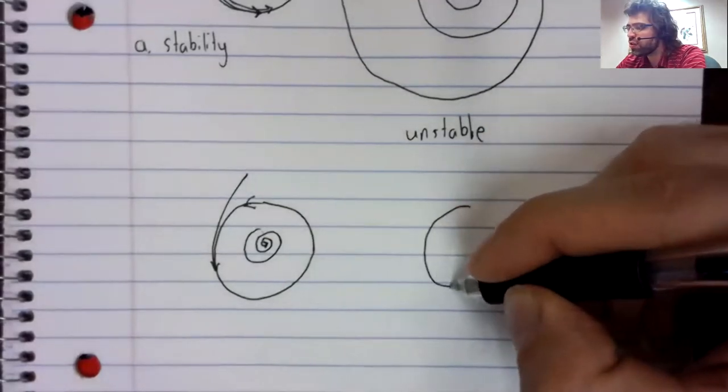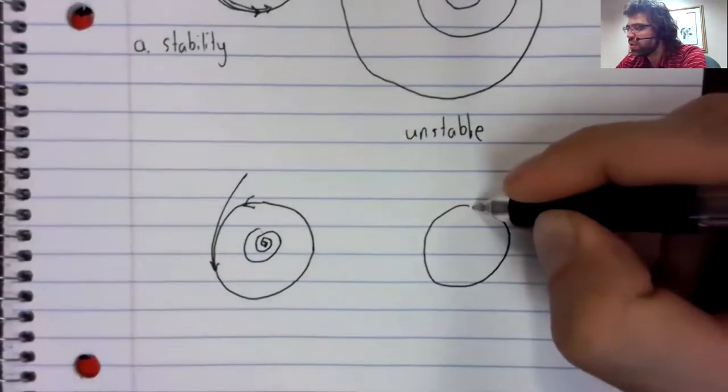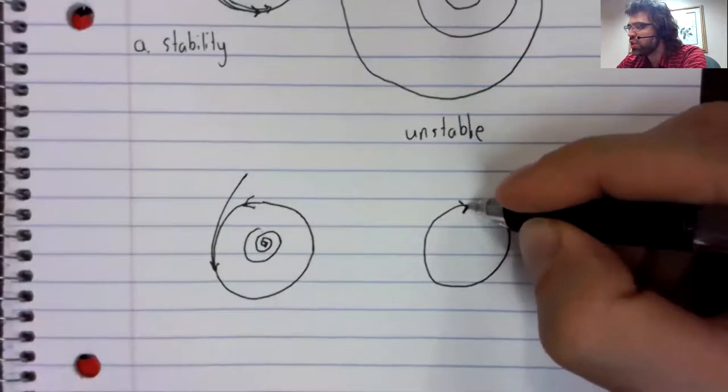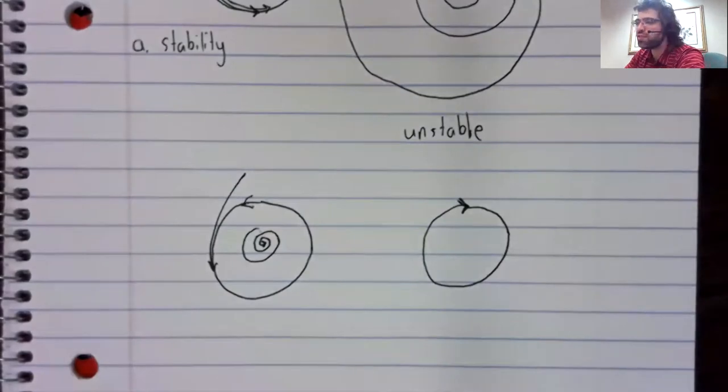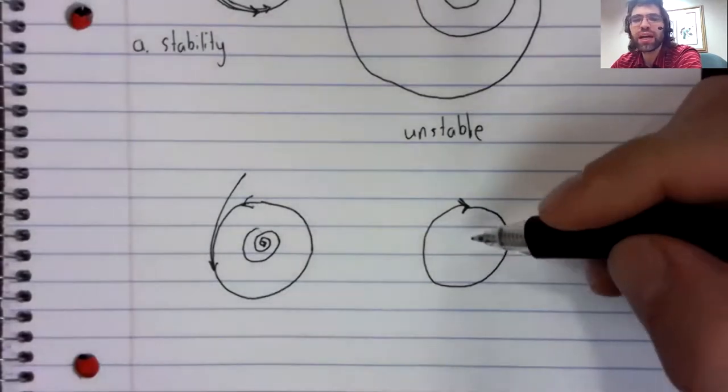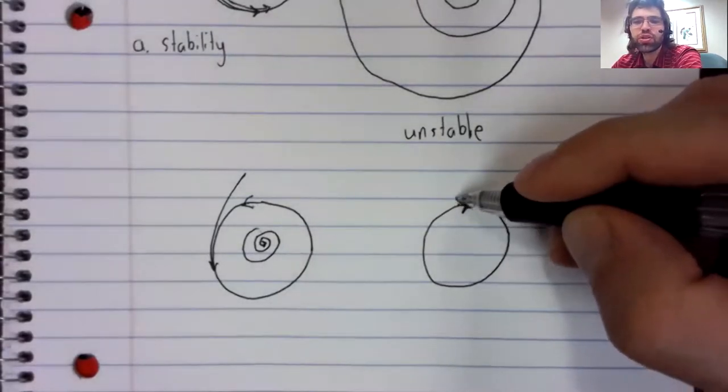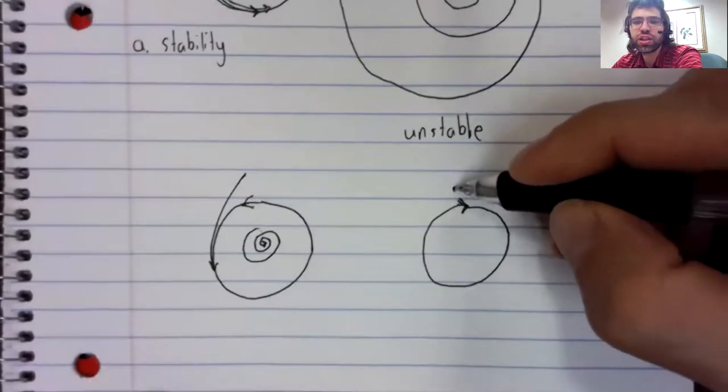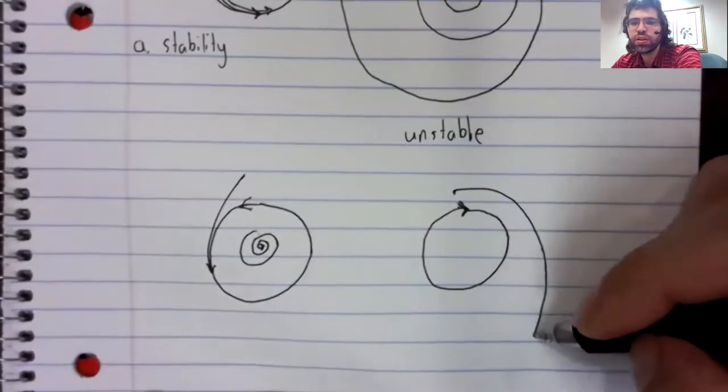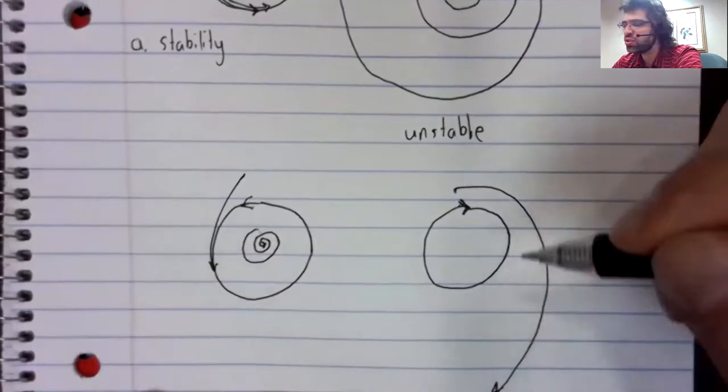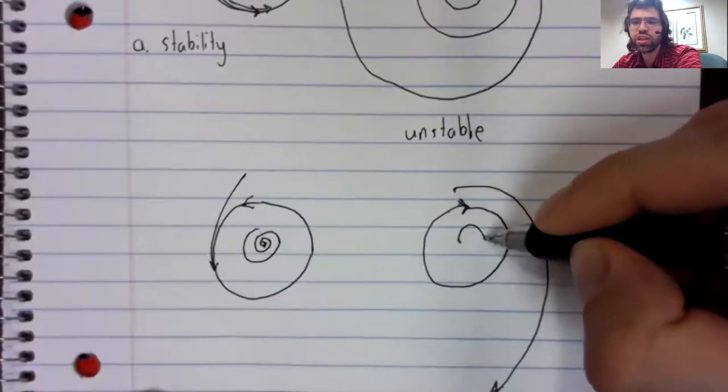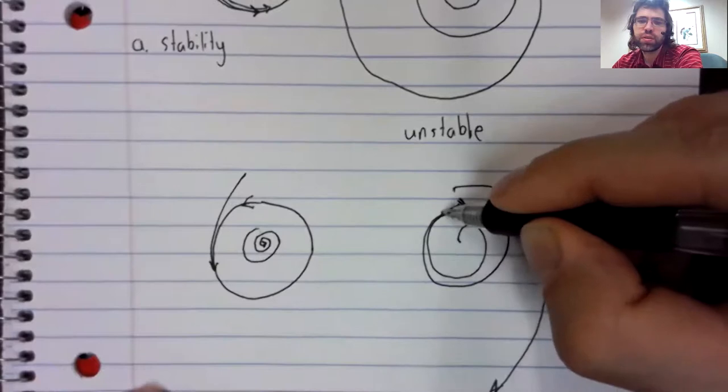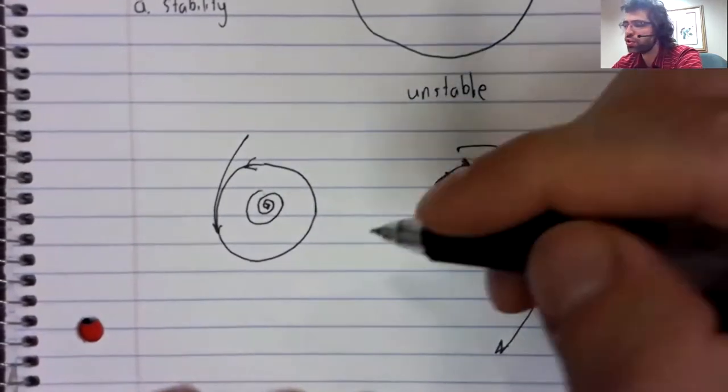Or vice versa. I'm changing between clockwise and counterclockwise orbits at random here. The direction doesn't matter. It could be that if you are pushed off the orbit in this direction, you go away from it. But if you are pushed off the orbit in this direction, you converge back to it.